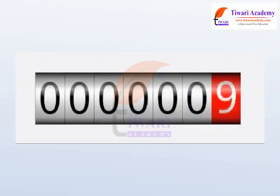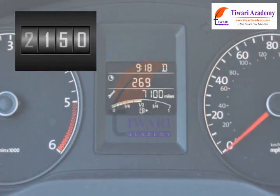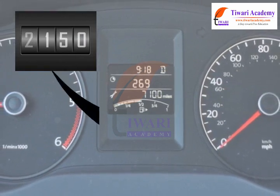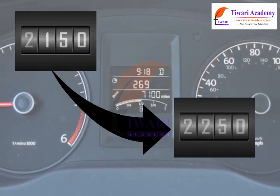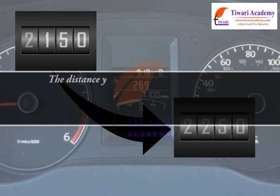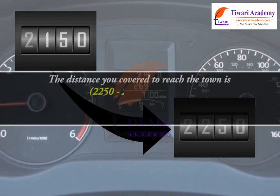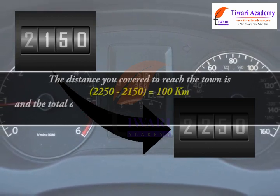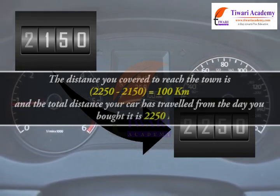The reading of an odometer always increases. Suppose your car was showing 2150 km in its odometer. You travelled to a nearby town and observe that the new reading is 2250 km. The distance you covered to reach the town is 2250 minus 2150, which equals 100 km. And the total distance your car has travelled from the day you bought it is 2250 km.